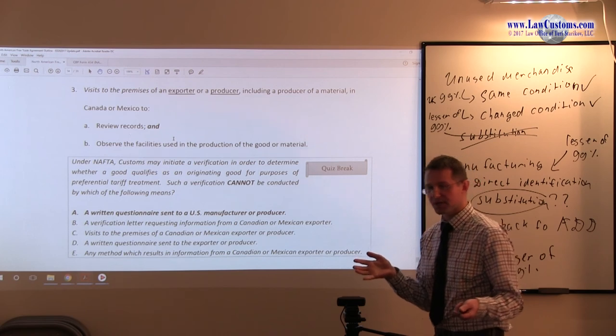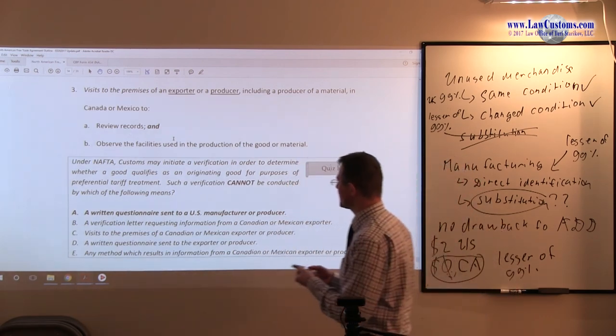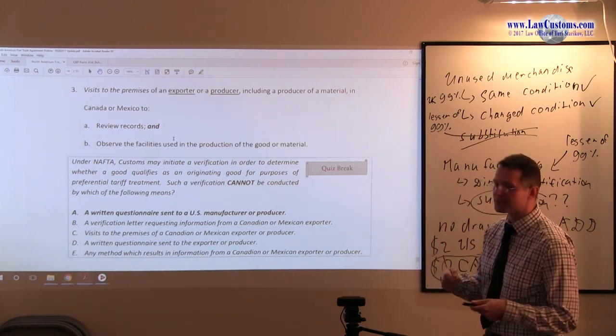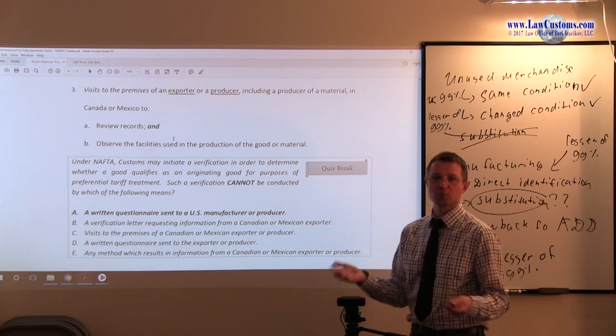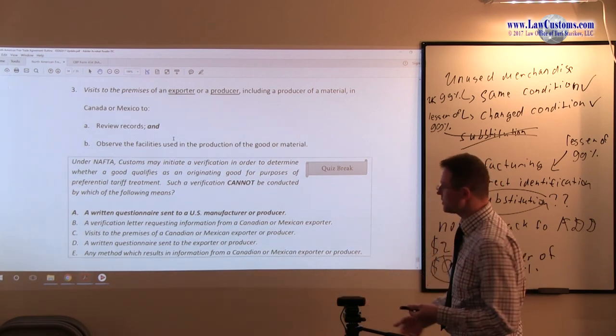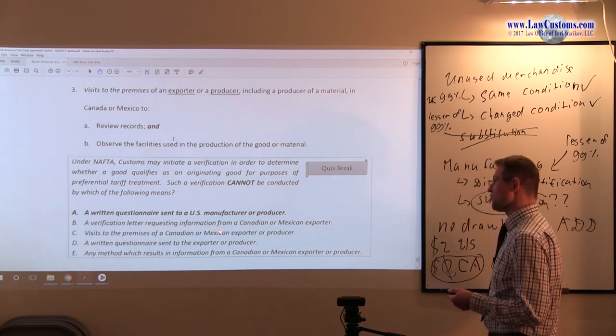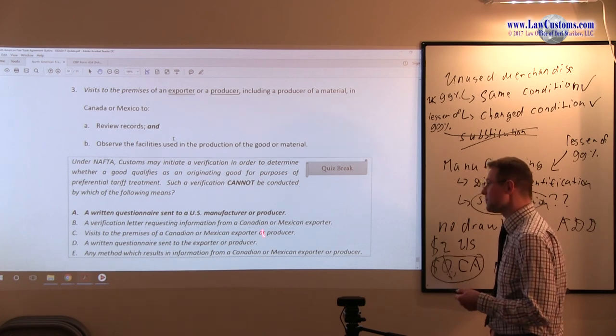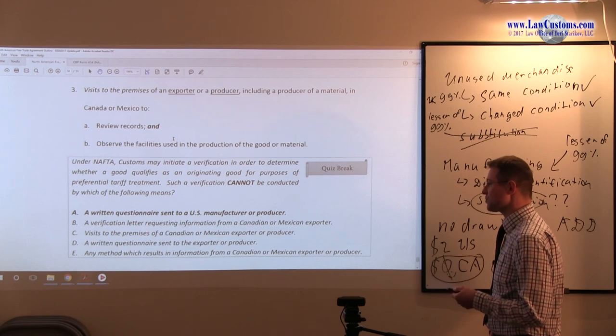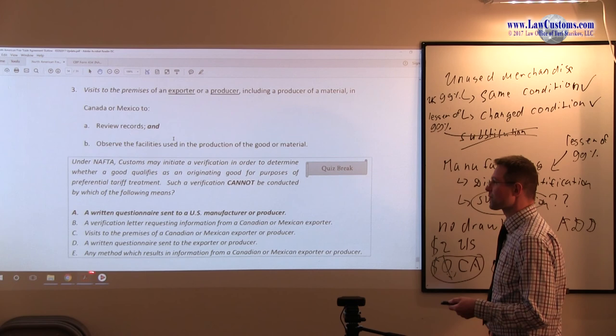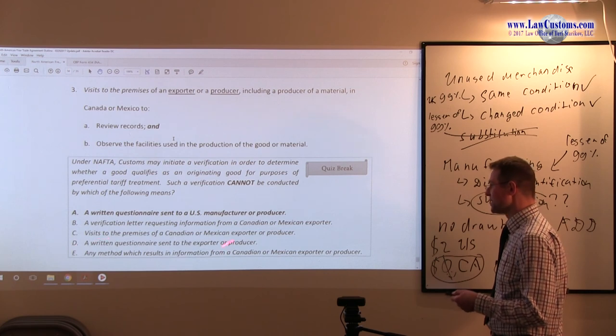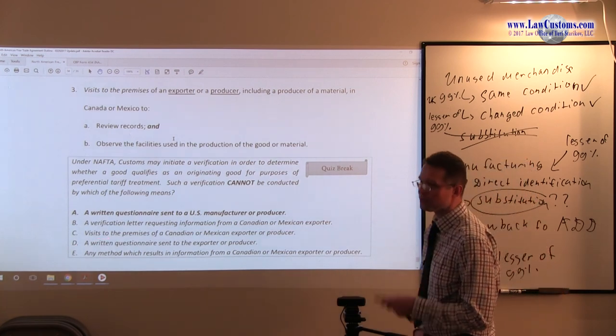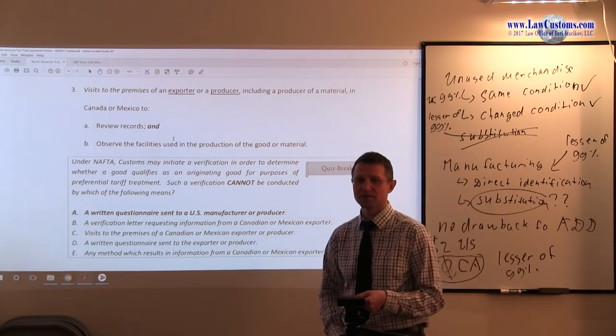This is the United States so the exporting country here would be either Mexico or Canada for NAFTA. It must be the Mexican or the Canadian, not the United States manufacturer, making A correct because verification cannot be sent to someone who has no burden of coming with the production of the requested documents. Verification of the request information from a Canadian or Mexican exporter on the other hand fits the bill. A written questionnaire sent to the exporter or producer, focus on the exporter or producer and any method which results in information. Pretty much anything goes as long as you have Canadian or Mexican side but not the United States side involved. A is the correct answer choice for this one.